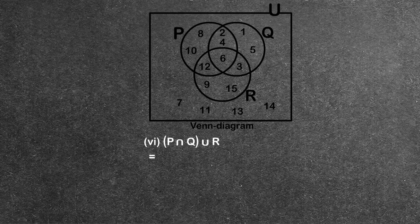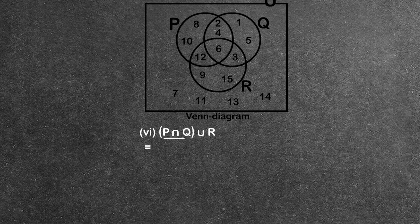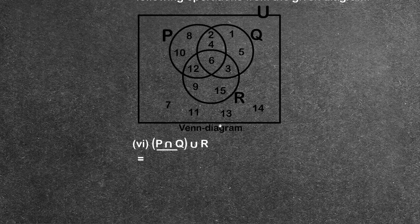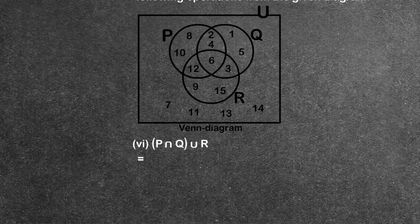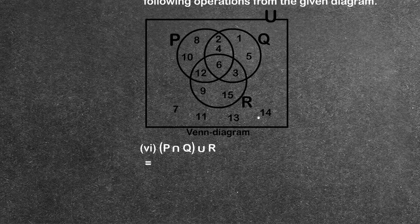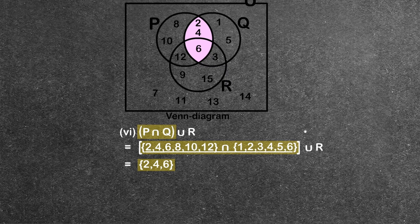Number 6: P intersection Q. The elements of P intersection Q are 2, 4, and 6.